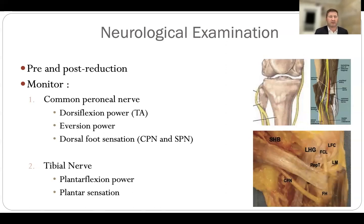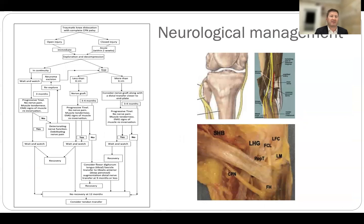Neurological examination is critical — up to a quarter of patients with an acute posterolateral corner injury will have an associated common peroneal nerve palsy. Assess the common peroneal nerve with dorsiflexion power, eversion power, and dorsal foot sensation, and the tibial nerve with plantar flexion power and sensation. It should be assessed pre- and post-reduction. Fortunately the majority are traction neuropraxias which will recover, though in the case of complete palsy or transection it's a complex management algorithm.